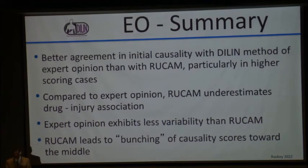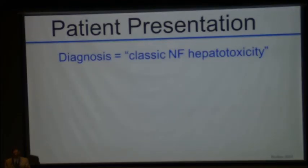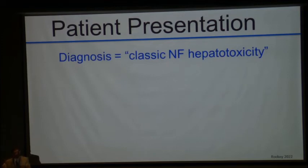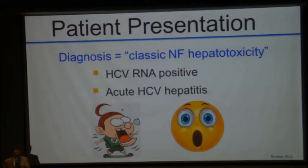There is a lot of scatter in RUCAM. Compared to expert opinion, RUCAM underestimates the drug-injury association in many cases. Expert opinion exhibits less variability. RUCAM tends to bunch causality scores in the middle, so it's not very good at differentiating causes. In our patient, expert opinion identified classic nitrofurantoin hepatotoxicity — it often has a long latency, this patient was on drug for three years, and it often causes a hepatocellular reaction. However, the patient had a hepatitis C antibody and not an RNA, and it turned out this patient had acute hepatitis C. So even expert opinion, while better, is not perfect and depends on high-quality data.